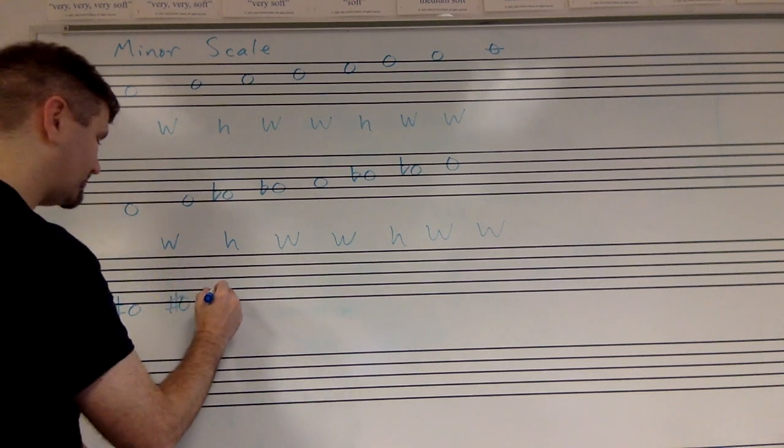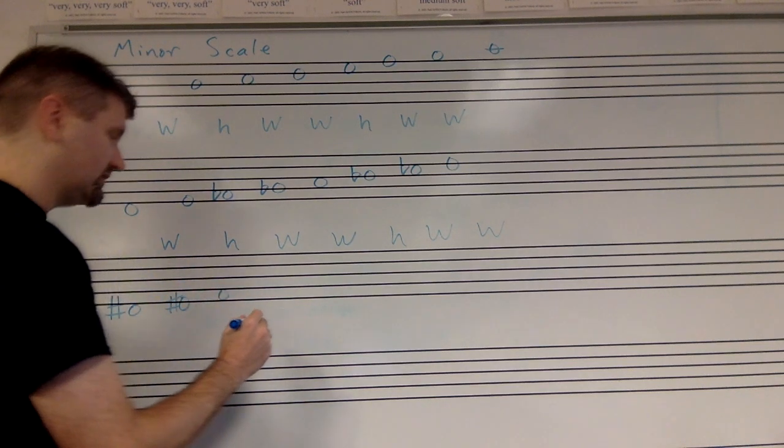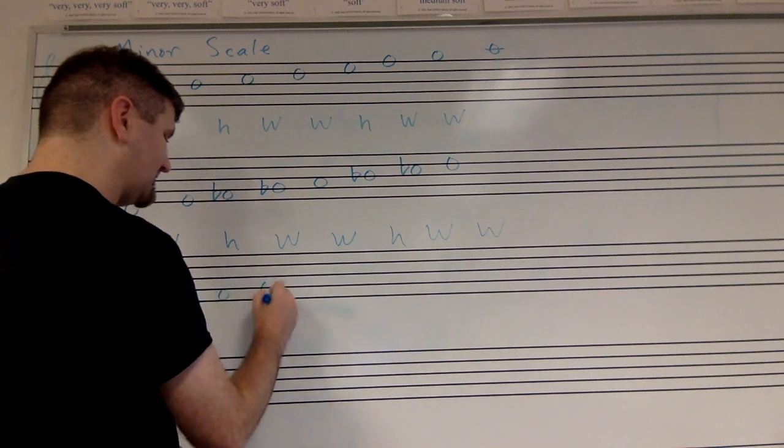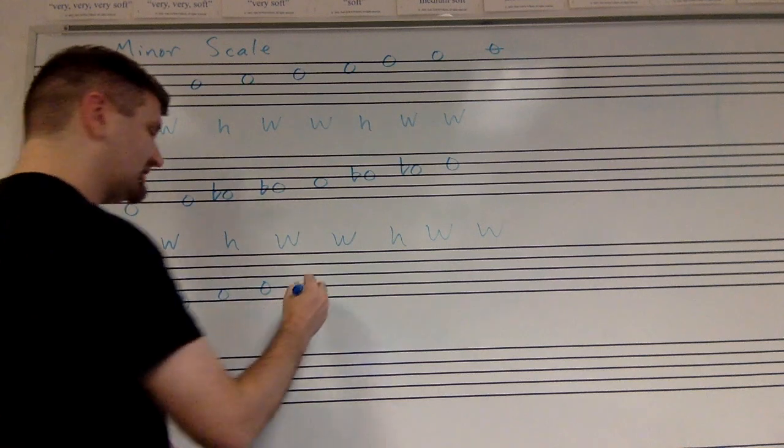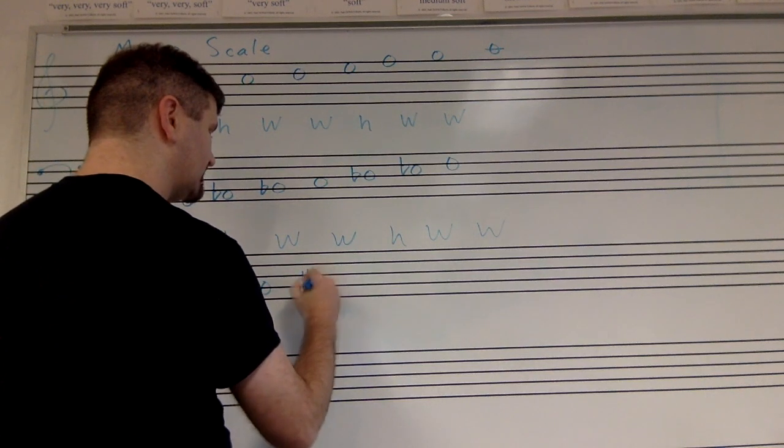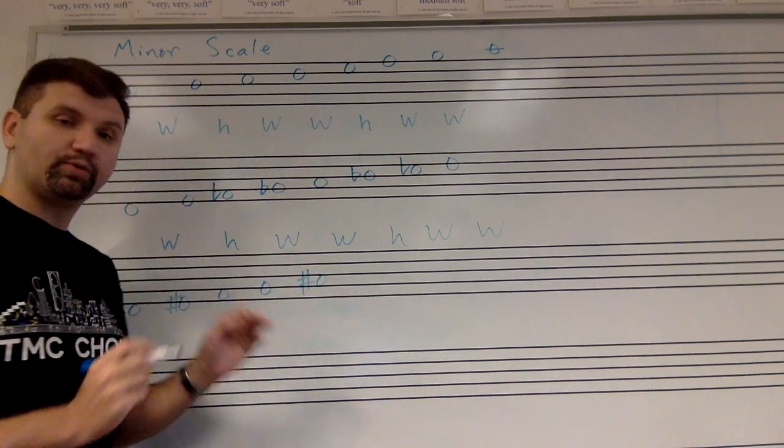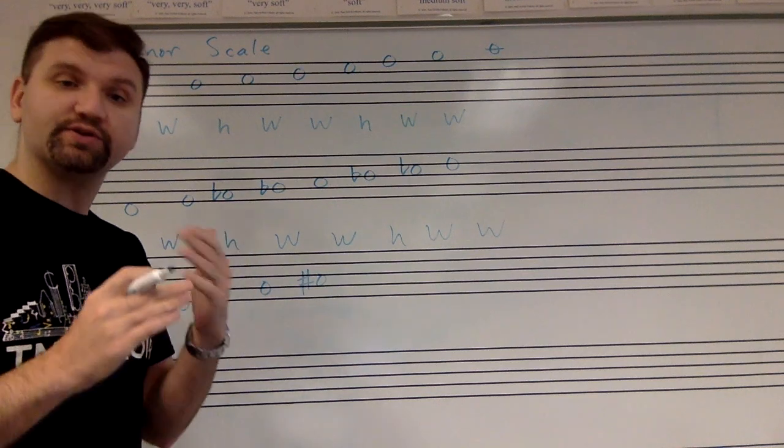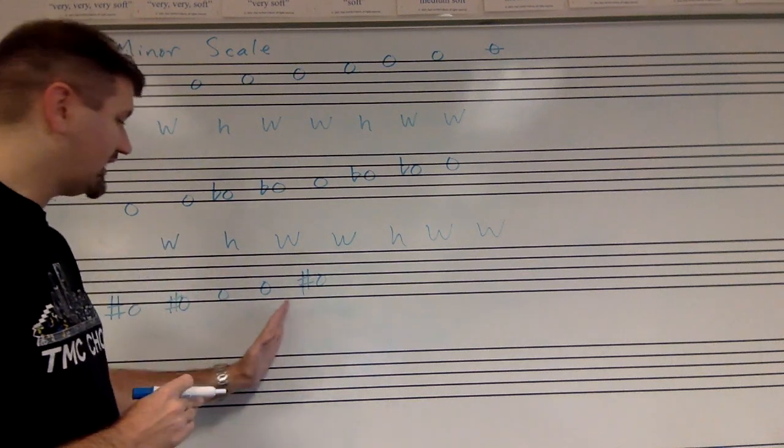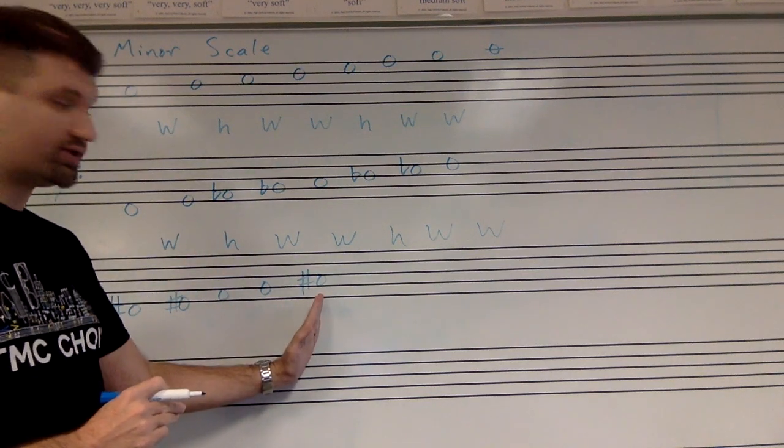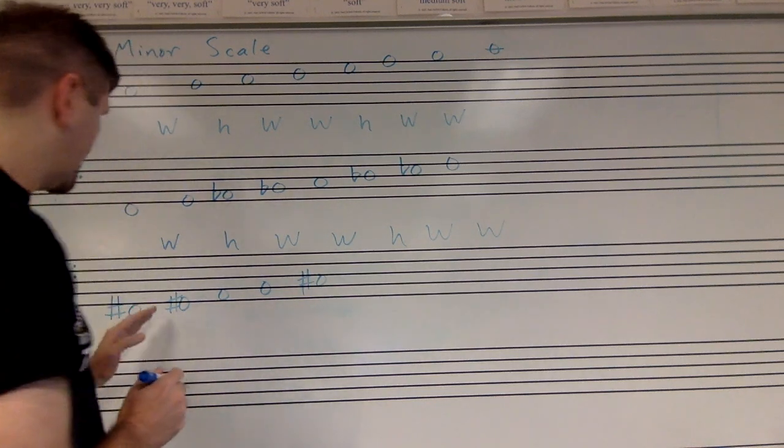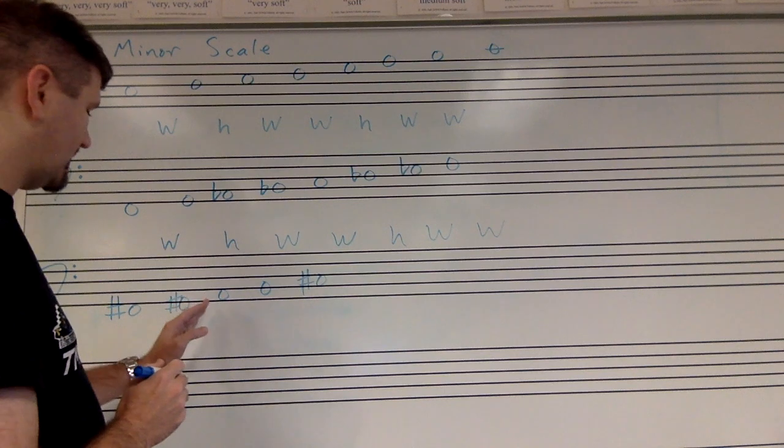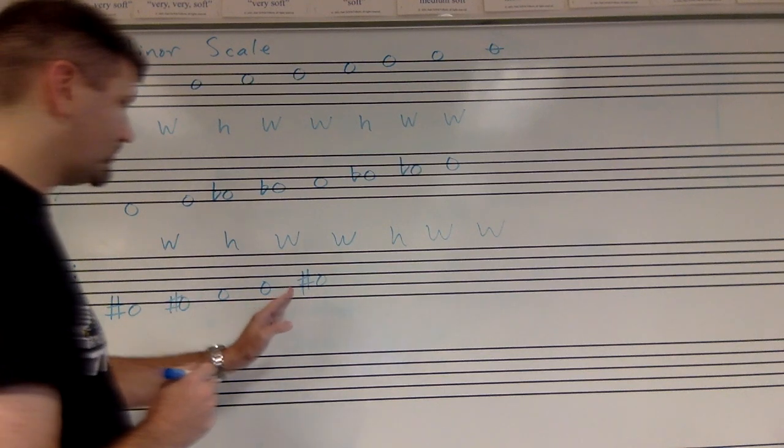And then a half step up would be A. A whole step up from A is B. A whole step up from B is C sharp. Very important that we remember where those sharps, or where those half steps naturally occur, and where that has to produce a sharp there to create a whole step. So we've got whole, half, whole, whole.